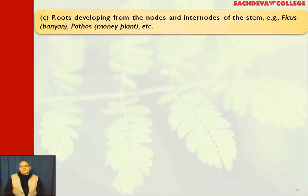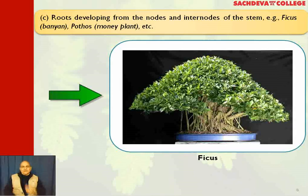The third type is roots developing from the nodes and internodes of the stem. An example is Ficus, commonly called the banyan tree. You must have observed the roots which come out from the nodes and internodes of the stem; they also help in supporting the plant. The oldest banyan tree can be found in Calcutta. Pothos, of course, is the money plant.